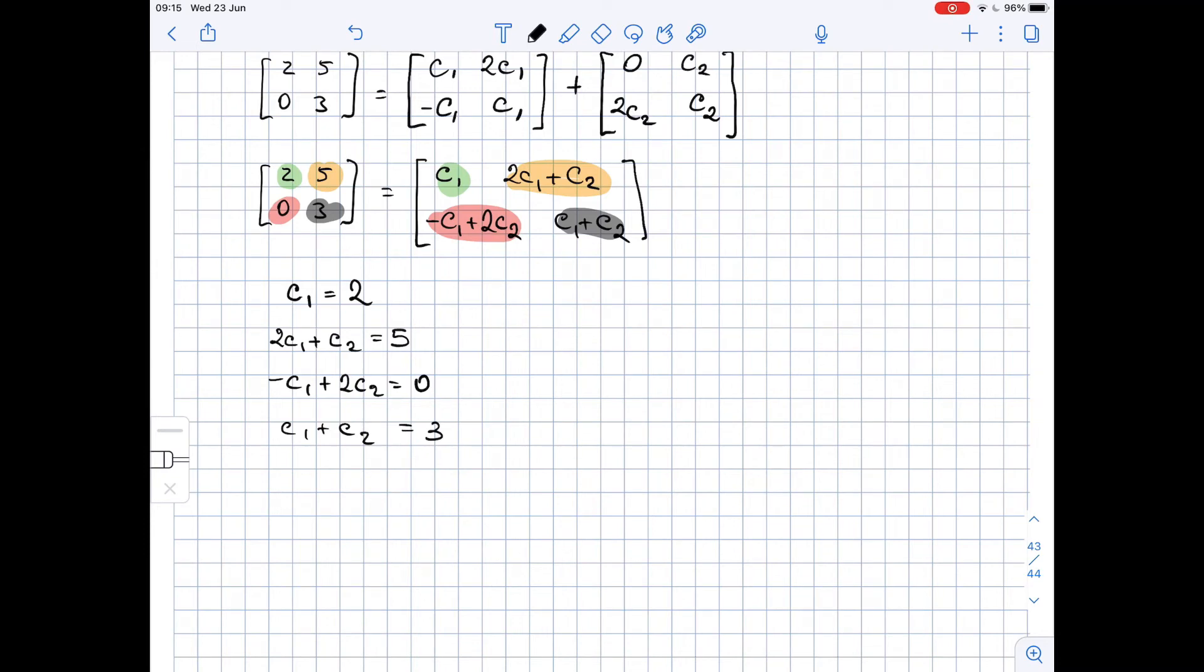Since from the first equation we get that C1 equals 2, then if we substitute 2 for C1 in the second equation, we get that 2 times 2 plus C2 equals 5, so C2 equals 1.